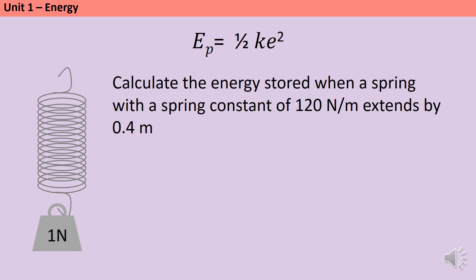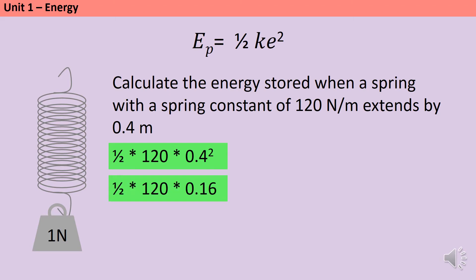Let's practise substitution. Calculate the energy stored when a spring with a spring constant of 120 newtons per metre extends by 0.4 metres. Using E_p = ½ × k × e²: 0.5 × 120 × 0.4². First work out 0.4 squared, which is 0.16, then multiply all together to get 9.6. Elastic potential energy is a type of energy store so the answer is 9.6 joules — make sure you write a capital J so your examiner knows you mean joules.